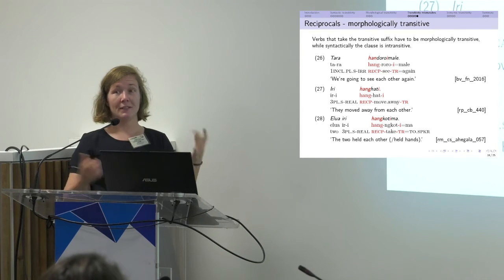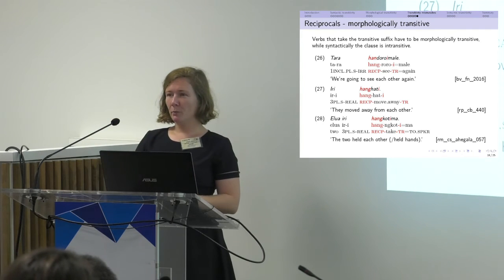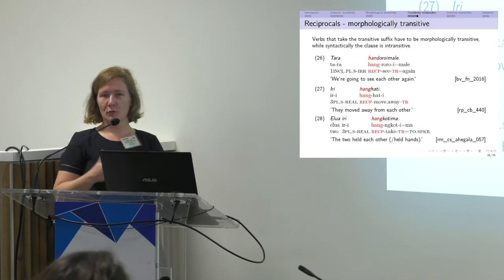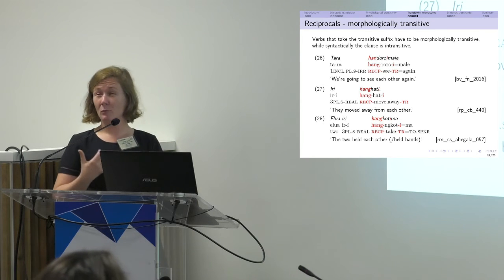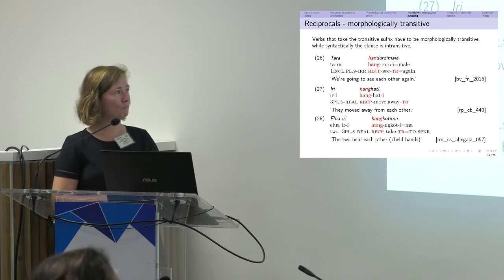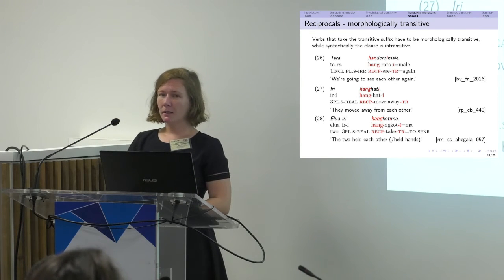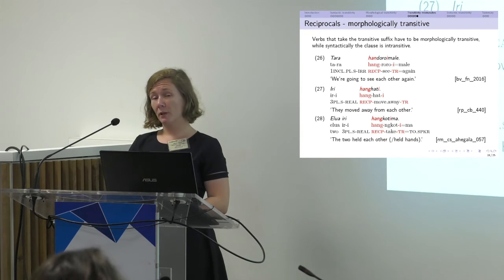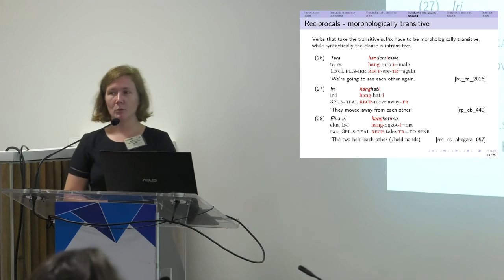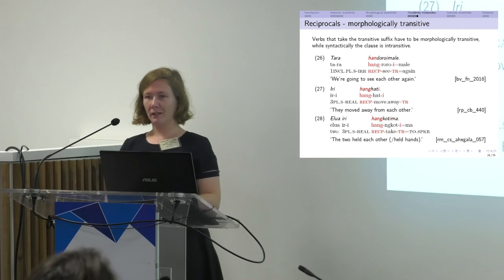I haven't found this reverse mismatch yet in any other languages — let me know if you do. The closest I found was in Papapana, where the clause is typically syntactically intransitive and the verb form is transitive with a transitive suffix, but there the reciprocal and reflexive are formally marked in the same way, and under certain conditions an object noun phrase can be realized for emphasis. Slightly similar in Longgu, it seems that in reciprocal constructions there's optional applicative marking, with a note that it's the only construction where the applicative marker can occur without an object suffix.